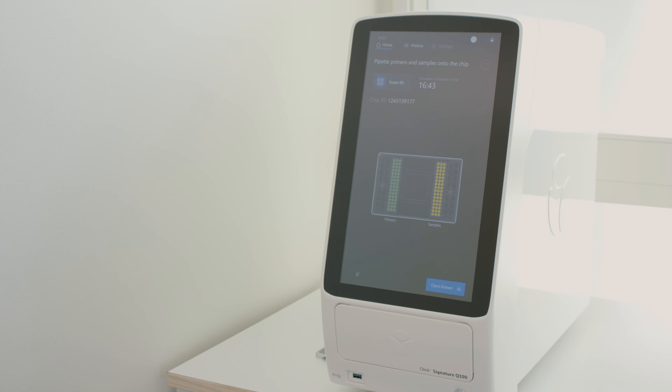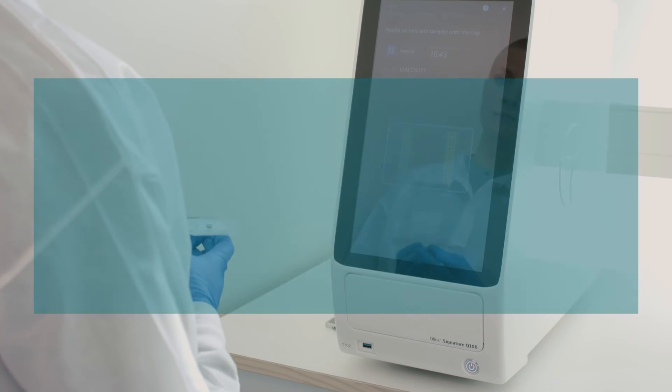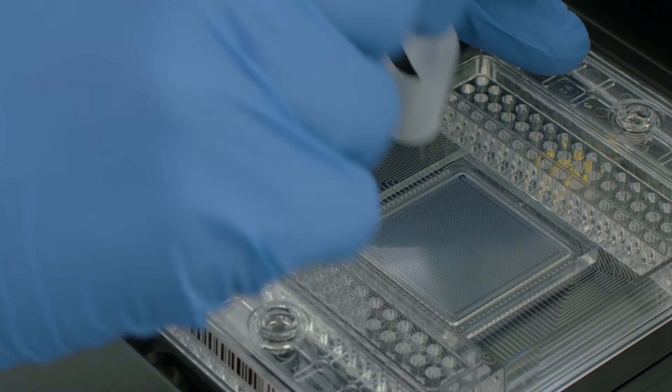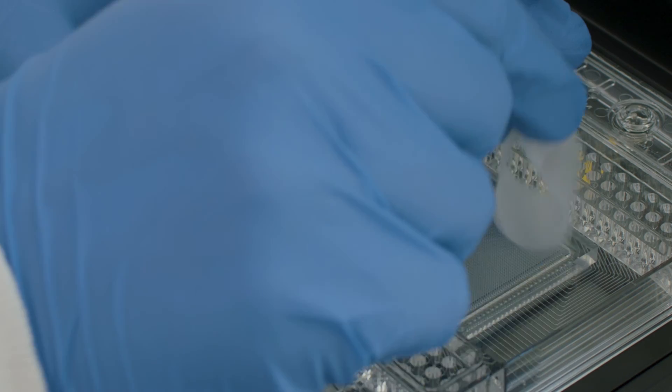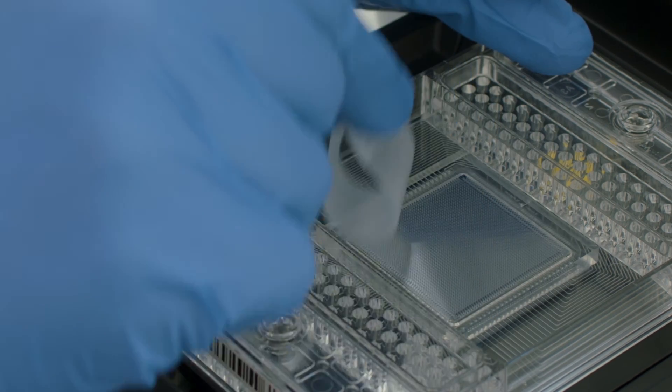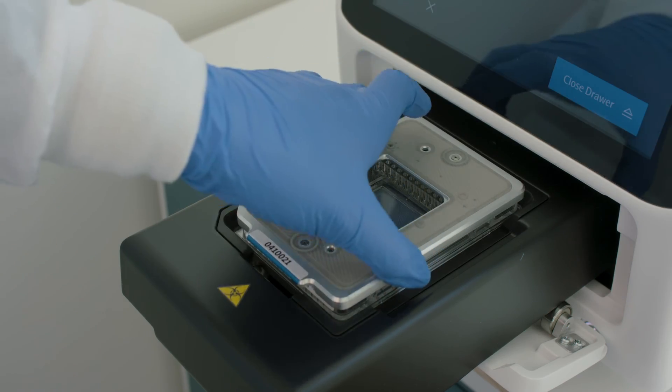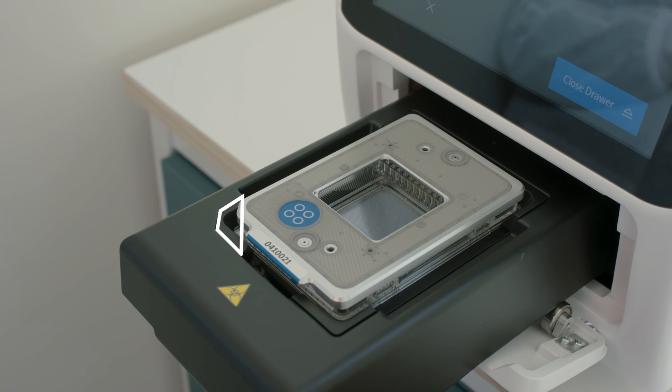With the Insert the Chip Containing Samples screen on display, place the IFC in the drawer. Use clear tape to remove any dust particles or debris from the IFC surface if necessary. Place the interface plate over the IFC. Align the notched corner of the IFC with the notch on the drawer and face the barcoded edges of the IFC and interface plate forward.